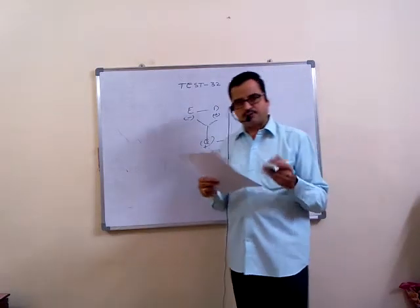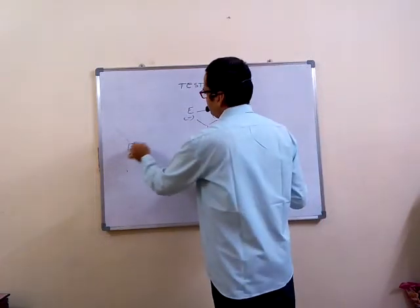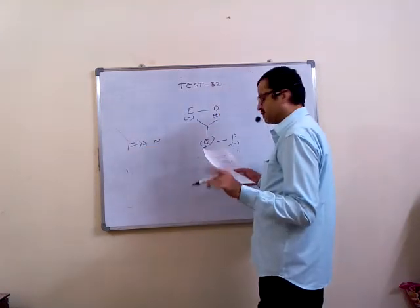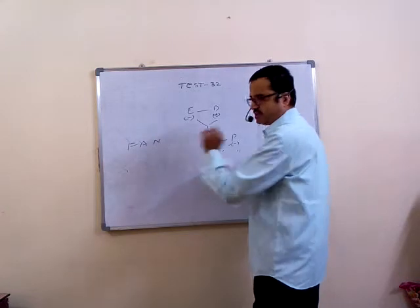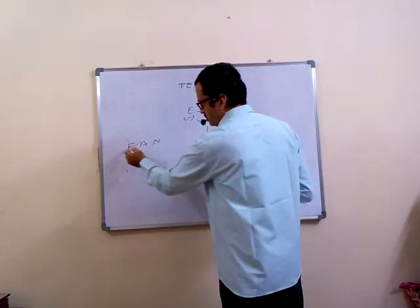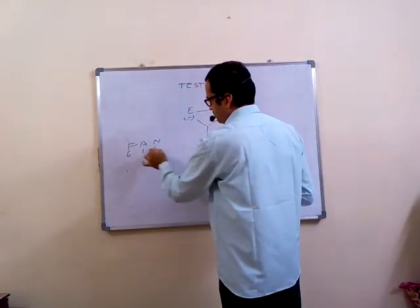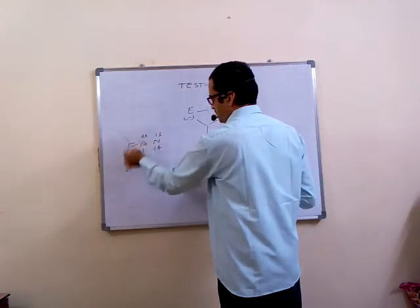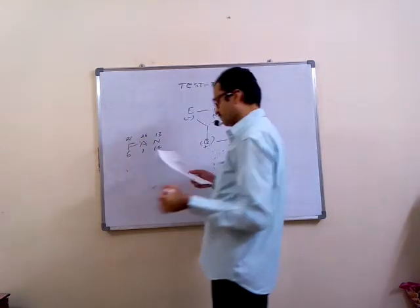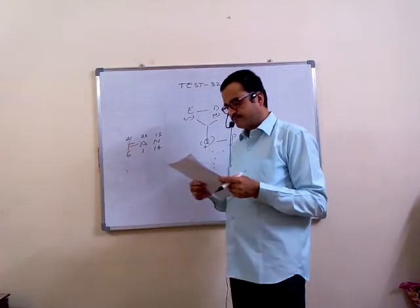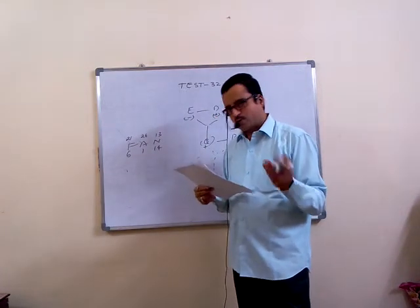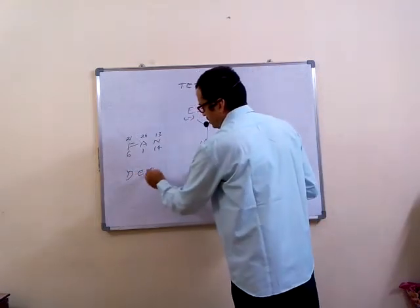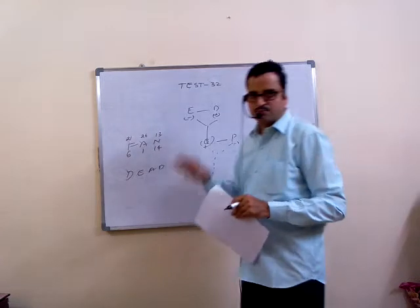Now fifth one, that is based on coding and decoding. Fan is coded as 21, 26, 13. What they have done? They have taken the value of the letter in the reverse order. If F value is 6, reverse order it becomes 21. A is 1, becomes 26. N is 14, becomes 13.